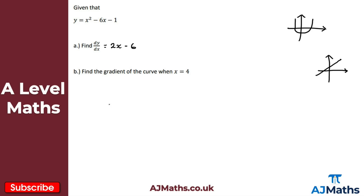For part b, we want the gradient of the curve when x equals 4. Since dy/dx allows us to find the gradient by substituting values of x, when x equals 4 the gradient is 2 times 4 minus 6, which is 8 minus 6, giving us 2. So the gradient of the curve at x equals 4 is 2.